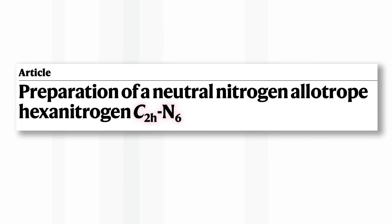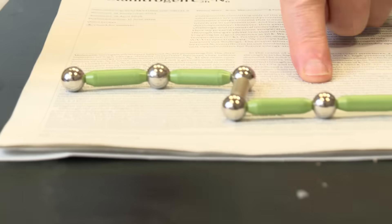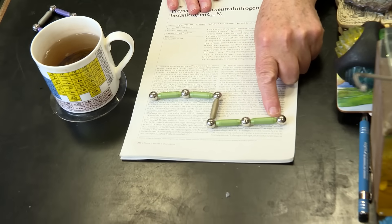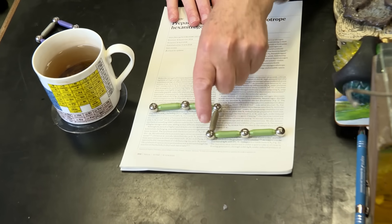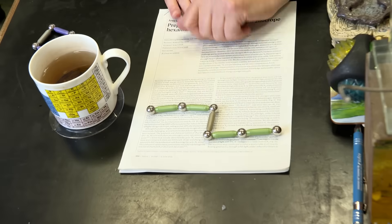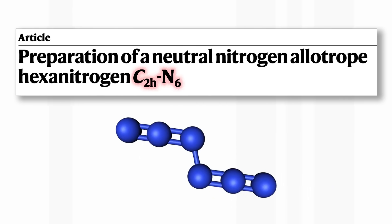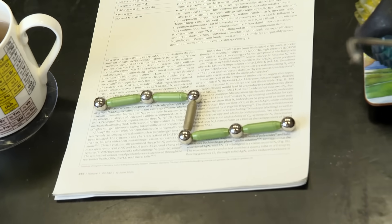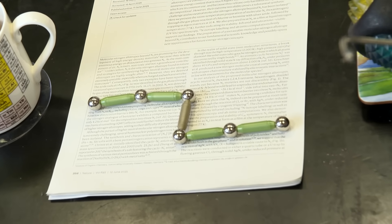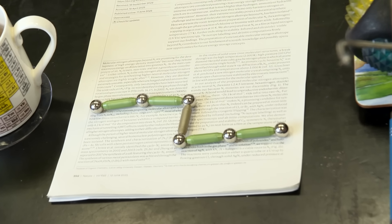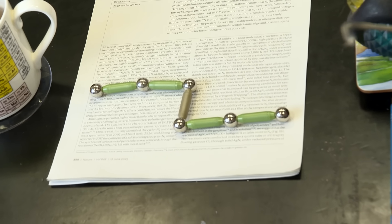They have called it C2H-N6, where C2H has nothing to do with carbon but describes the shape of this molecule — you can see it here. It has three nitrogens in a row here, three here, and it's joined by a bond more or less at a right angle. So it's a funny zigzag molecule. C2H refers to the symmetry of the molecule.